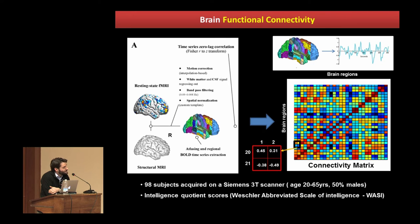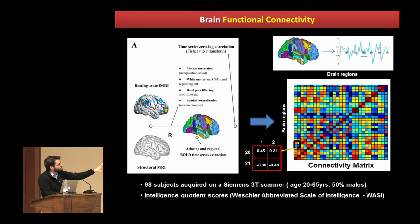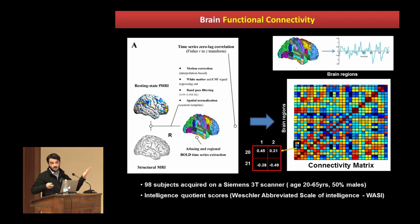If you focus on specific cells in the matrix, the colors represent the intensity of the connection between different regions. Red means highly correlated — 0.45, 0.31 — while blue means anti-correlation, like minus 0.38 or minus 0.49. With one single connectivity matrix, you have an idea of why different brain regions are connected and whether they are synchronized — one goes up the other goes up — or anti-correlated. When you apply graph theory metrics to connectivity matrices calculated at different levels of connection intensity, you get estimates of network efficiency and resilience.